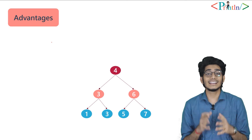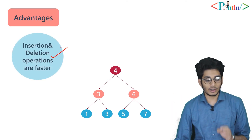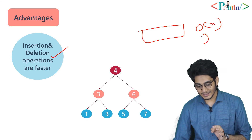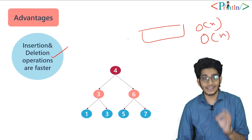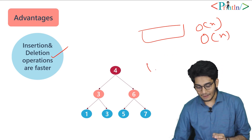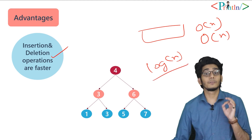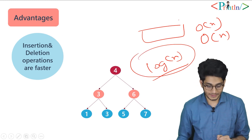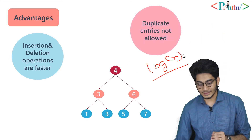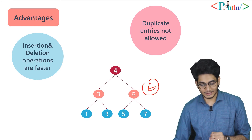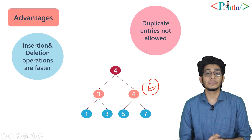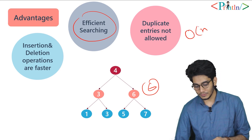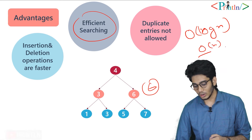Now we'll look at the advantages of BST. Insertion and deletion operations are faster — in an array, insertion takes O(n) time; in a linked list, insertion also takes O(n) time; but in a BST it takes O(log n) time on average. In the worst case it takes O(n) time, but for the average case it takes O(log n) for both insertion and deletion. Also, duplicate entries are not allowed in binary search trees. BST gives us efficient searching at O(log n) for the average case.